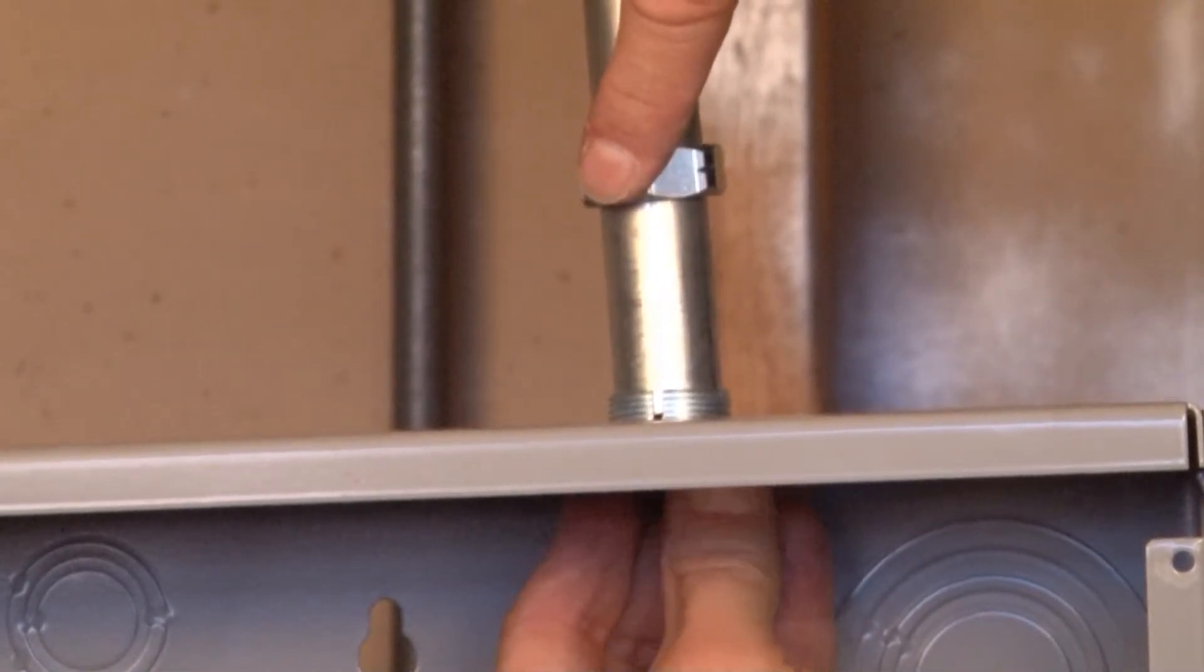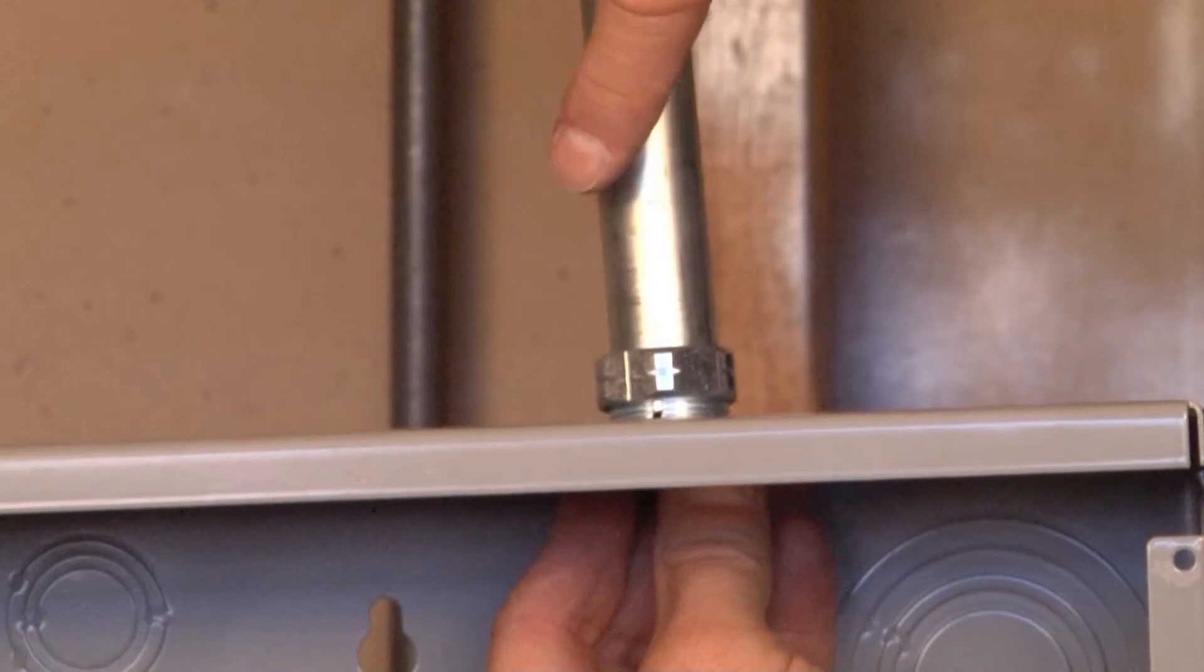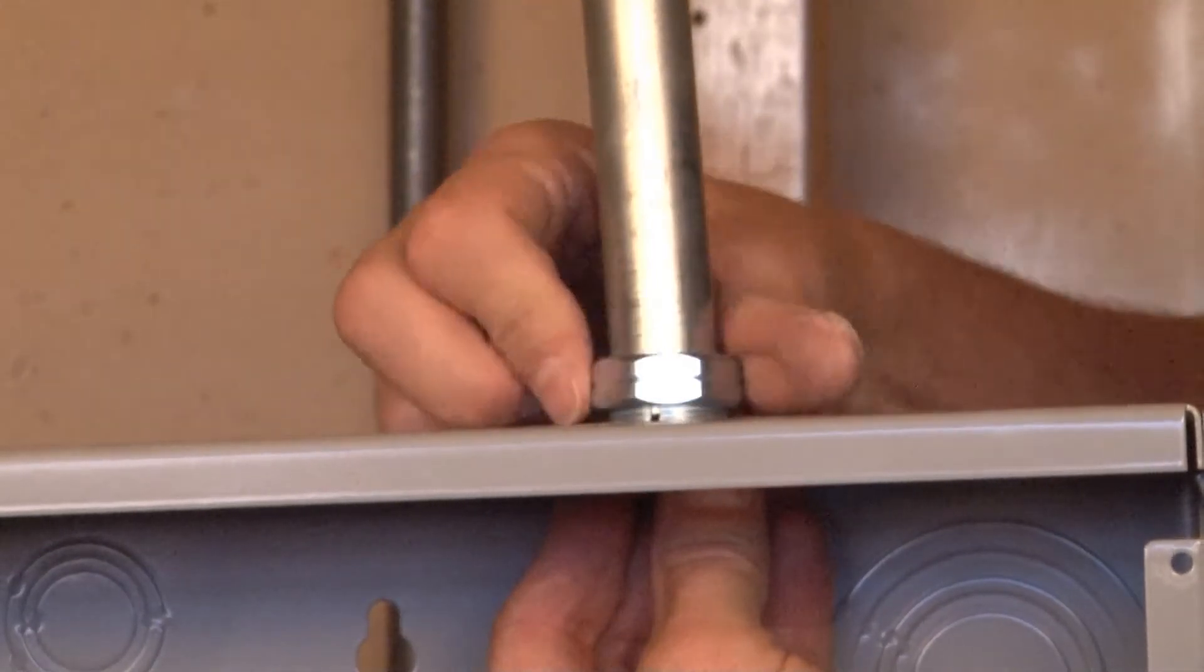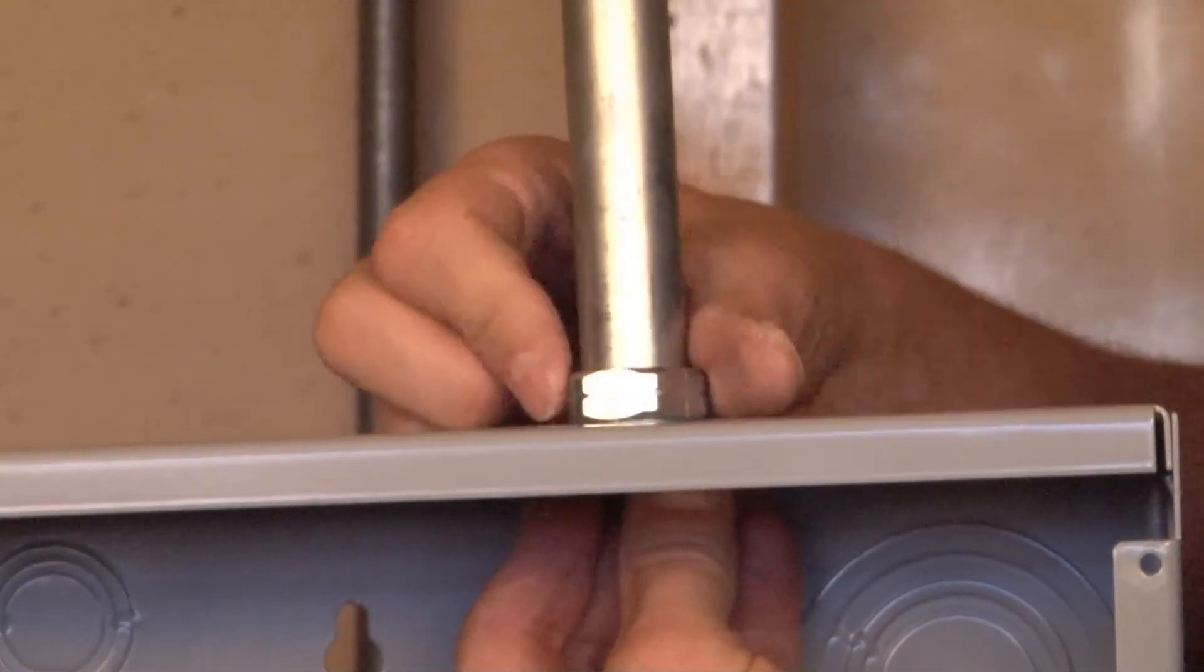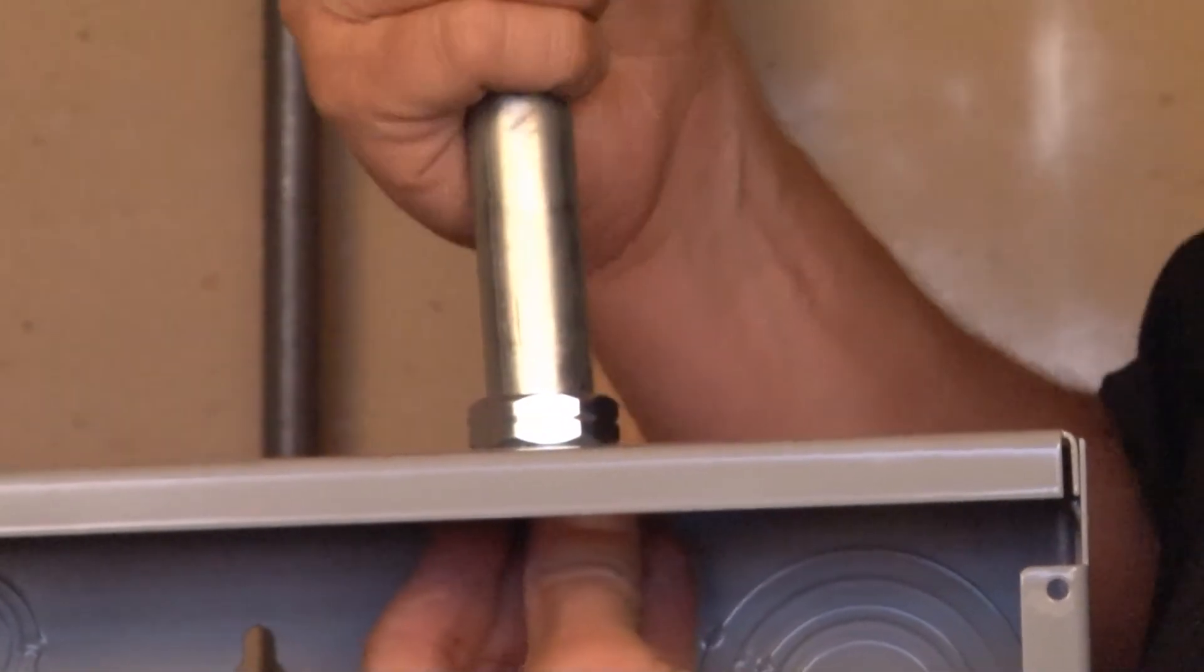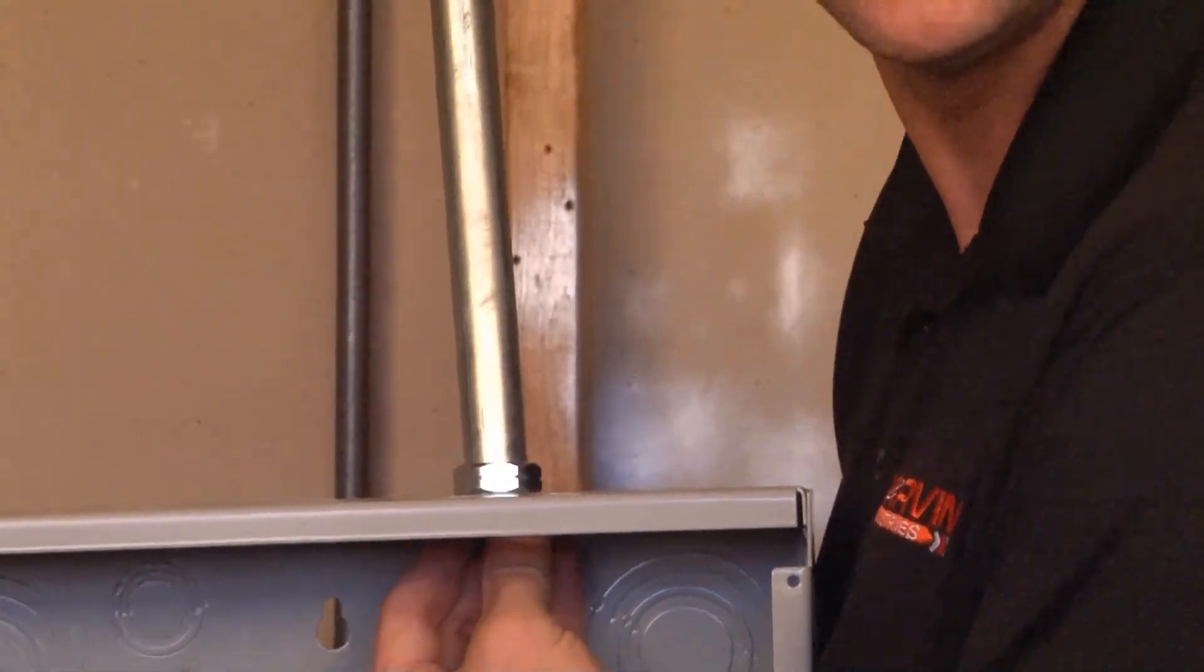Now you want to drop your connector gland back into place, and you can simply tighten it on. And as you tighten this gland, it bites on the conduit and completes the installation.